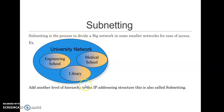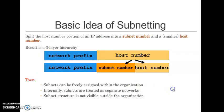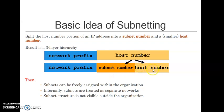A large network is divided into smaller networks, adding another level of hierarchy to the IP addressing structure — this is called Subnetting. The three levels of hierarchy are: first, Network ID (also called Network Prefix); second, Subnet ID (also called Subnet Number); and third, Host Number (also called Host ID). Subnets can be freely assigned within the organization depending on how many subnetworks are needed.